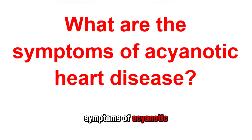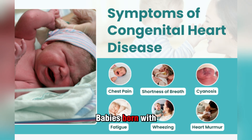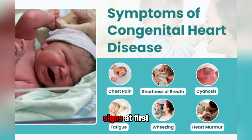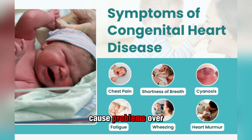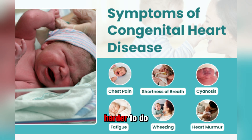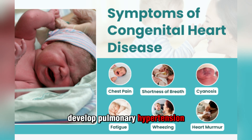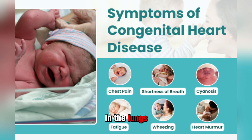What are the symptoms of acyanotic heart disease? Babies born with acyanotic heart disease may have a heart murmur, but others may not show any signs at first. Even without initial symptoms, these defects can cause problems over time. People with these defects often develop high blood pressure as the heart has to pump harder, and may also develop pulmonary hypertension — high blood pressure in the lungs — and can eventually develop heart failure.